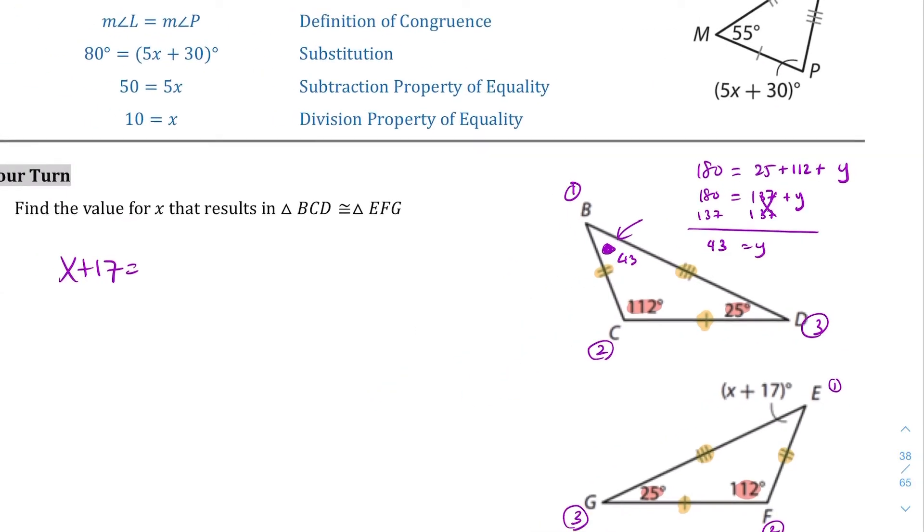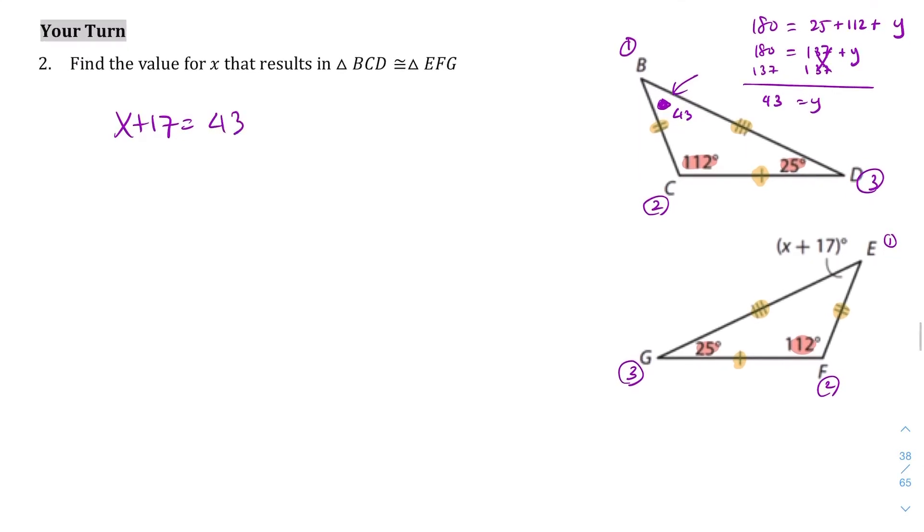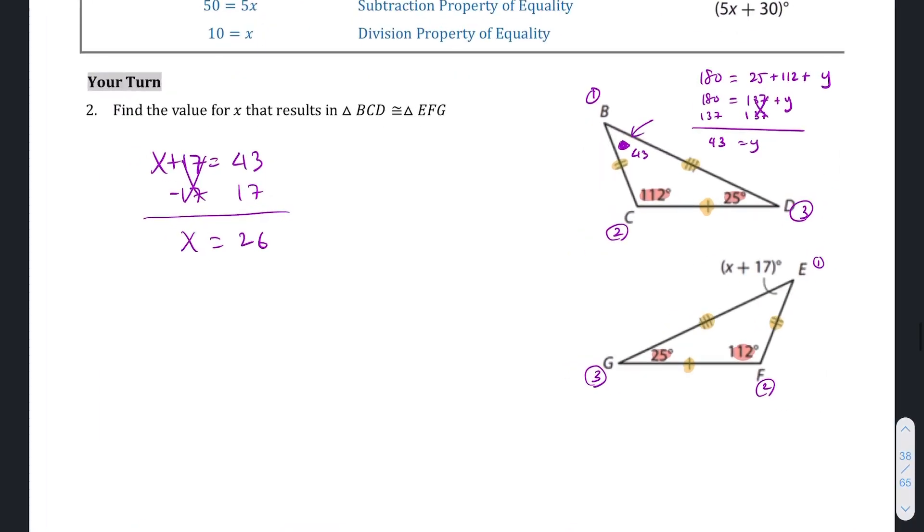Now we have what we need. X plus 17 is going to equal 43. Now that we've done that, we're going to subtract the 17 from both sides. This goes away, we get x equals 26. So that is the value of x that makes both of those triangles equal.